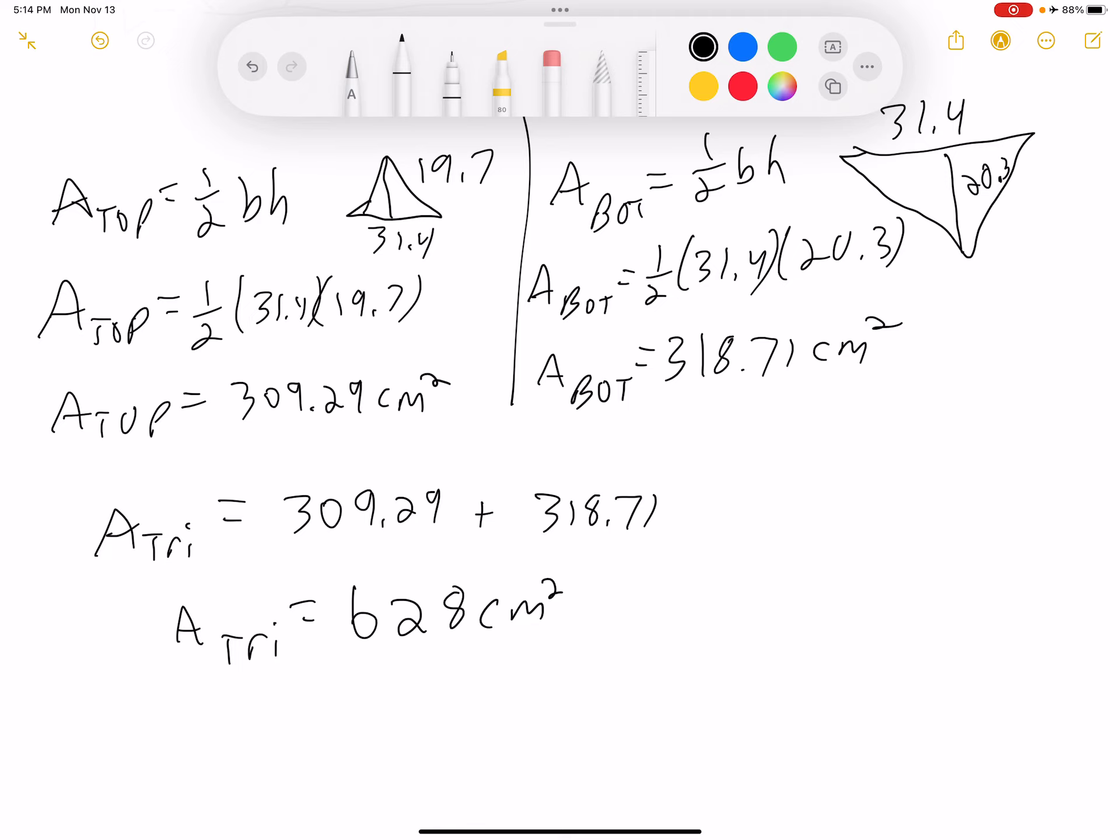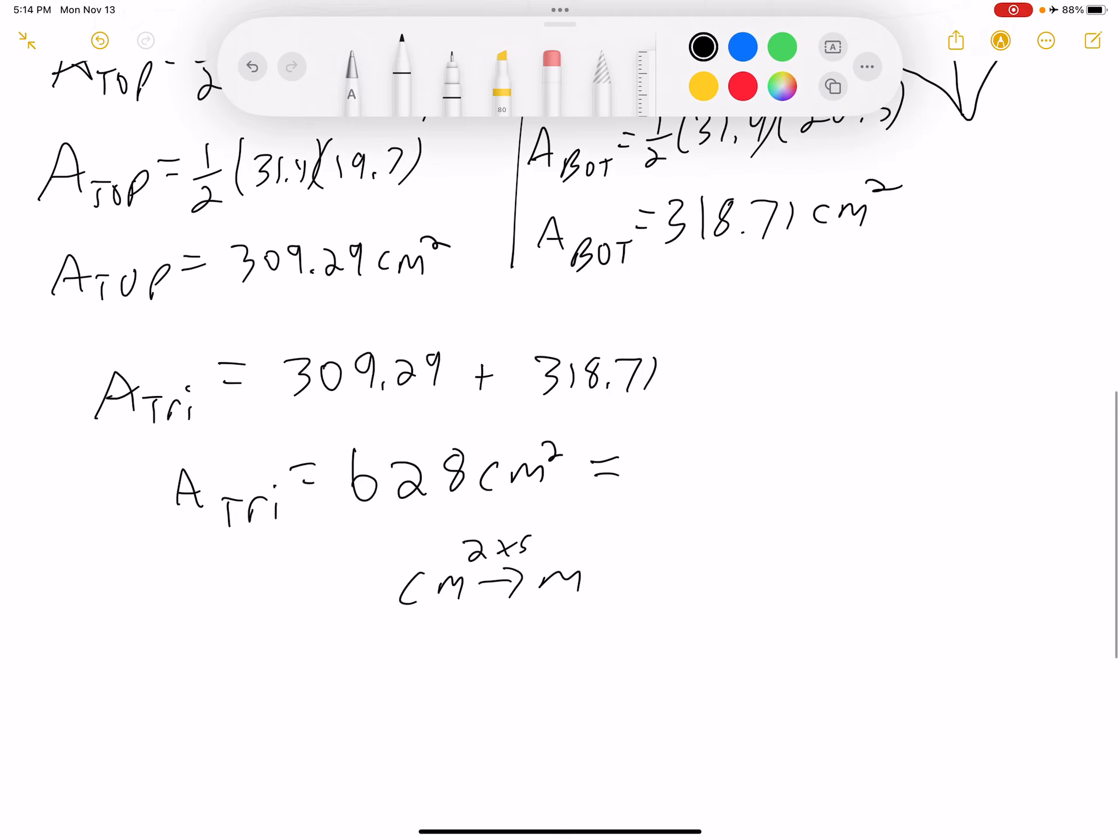This is great and all, but I don't want square centimeters. I want to convert this to meters, square meters. So to convert square centimeters to square meters, we have to move the decimal point over. If we're converting centimeters to meters, we move it over two times. However, if we're moving over square centimeters to square meters, we have to move it over four times.